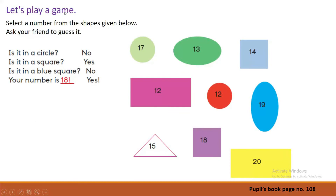Let's play a game. Now look at your book. Select a number from the shapes given below. Ask your friend to guess it. Today we are going to play a game. Do you know how to play this game? I will tell you. Now look at your book. There are some numbers in the shapes. Let's read numbers with their shape.